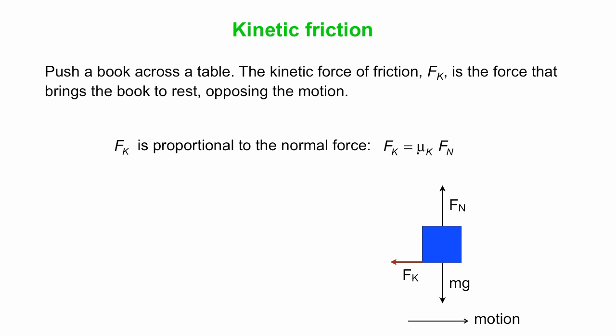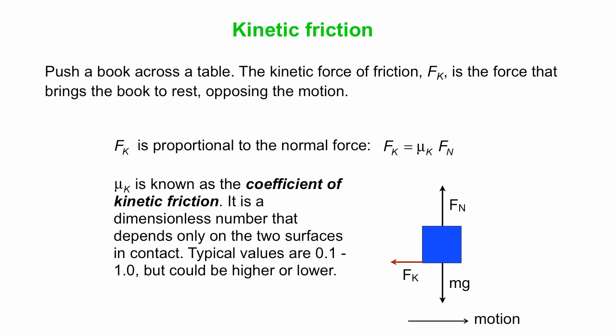In our simple model, the kinetic force of friction, Fk, is proportional to the normal force. We say Fk is mu K times Fn. Mu there is the Greek letter mu. Mu K is known as the coefficient of kinetic friction. Another way to write that is mu K equals Fk over Fn. It's the ratio of forces, so it doesn't have any units of its own. It's dimensionless.